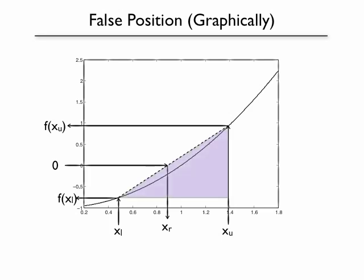We're going to use some geometry. We've got one triangle here where the base is distance x upper minus x lower, and the height is function of x upper minus function of x lower.